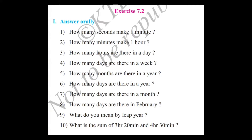What is the sum of 3 hours 20 minutes and 4 hours 30 minutes? 4 plus 3 is 7, and 2 plus 3 is 5. The answer is 7 hours 50 minutes.